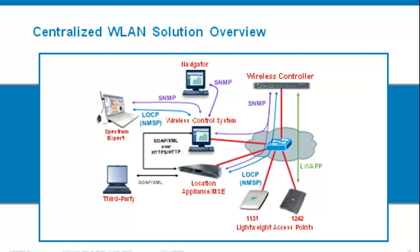WCS talks with the controller over the SNMP protocol and talks with the location appliance using SOAP XML over HTTP or HTTPS depending on how you have configured it. Between the location appliance and the wireless controller, the NMSP protocol is used to exchange data about tracked clients. Between your access points and your controller, you're using either LWAP or CAPWAP protocol.